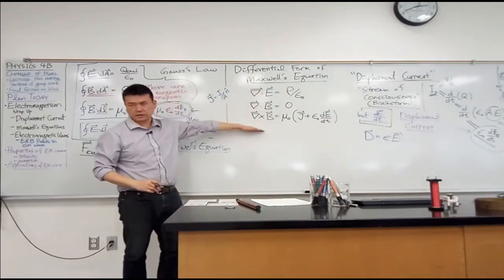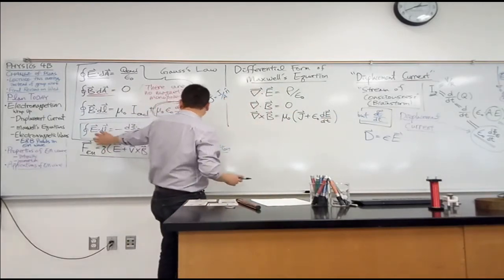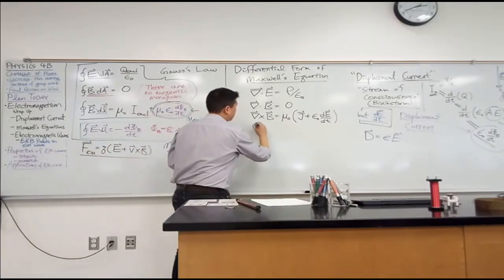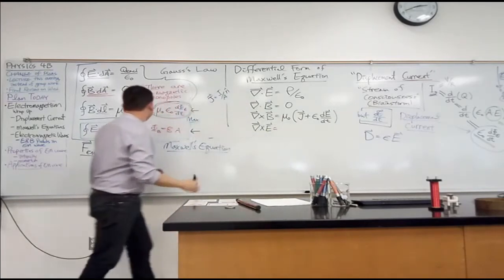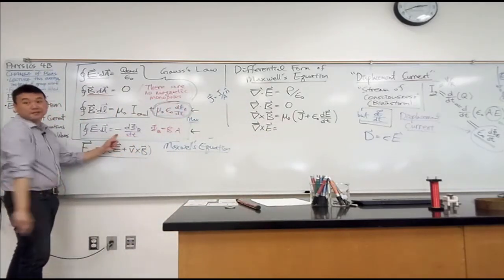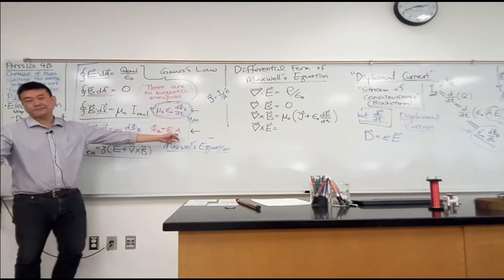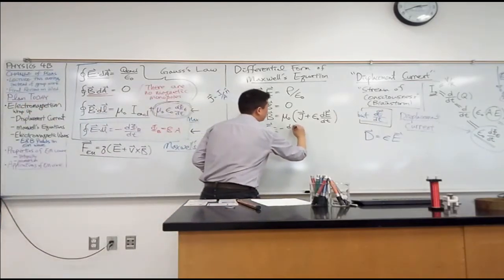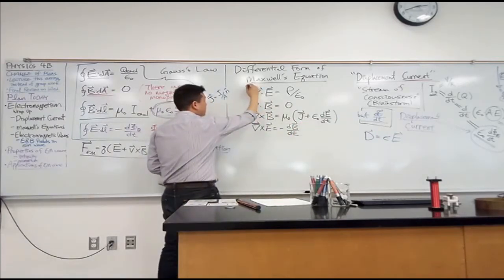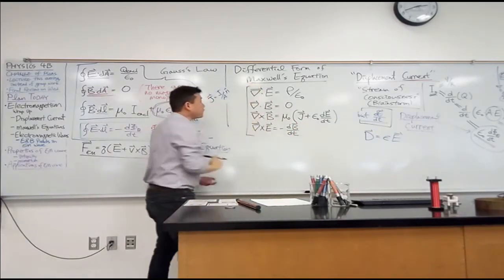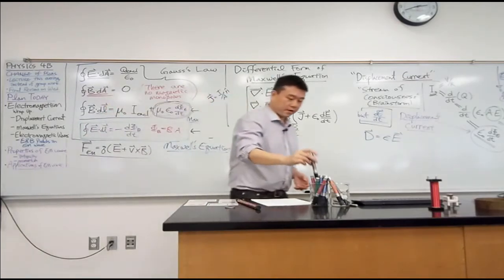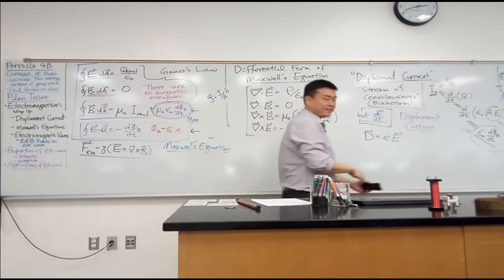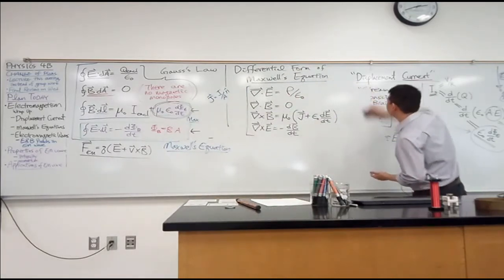This is the displacement current term, with epsilon naught times the rate of change of the electric field. And the last equation is the curl of the electric field, which is minus the rate of change of the magnetic field.